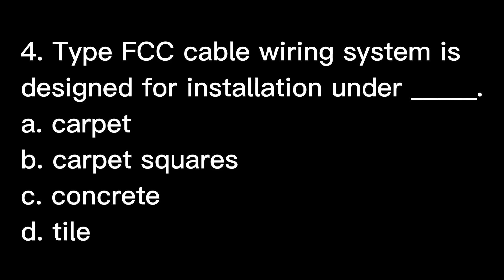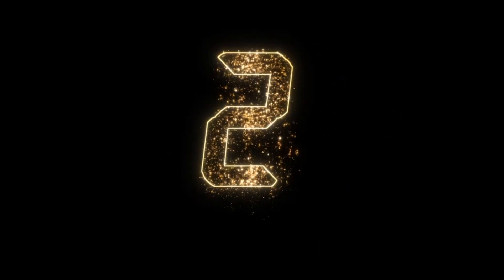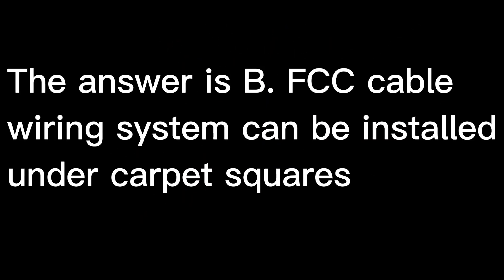Question 4: Type FCC cable wiring system is designed for installation under: A. Carpet, B. Carpet squares, C. Concrete, D. Tile. The answer is B. FCC cable wiring system can be installed under carpet squares.